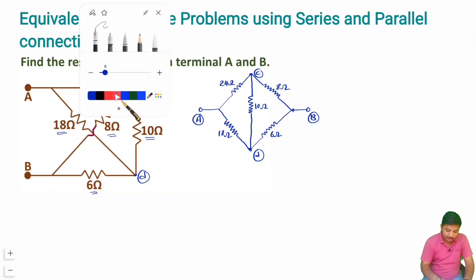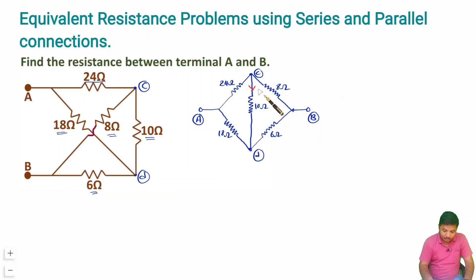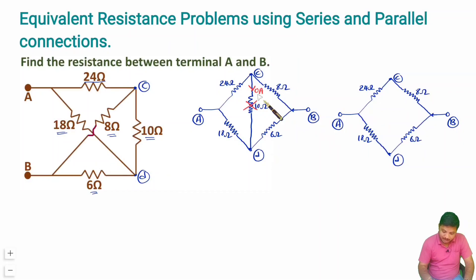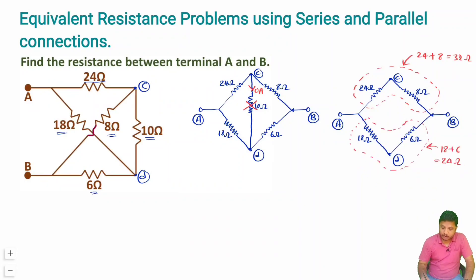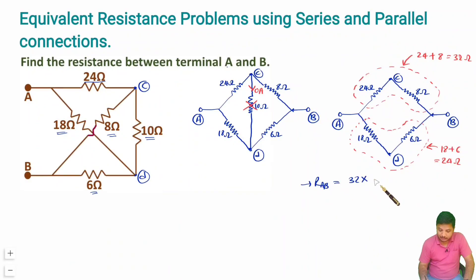Since the Wheatstone bridge is in balance condition, zero current passes through the middle link, so we can remove it. With that link removed, 24-ohm and 8-ohm are in series giving 32-ohm, and 18-ohm and 6-ohm are in series giving 24-ohm. Therefore RAB is the parallel combination: RAB = (32 × 24) / (32 + 24). Please solve this and post your answer for question 1.